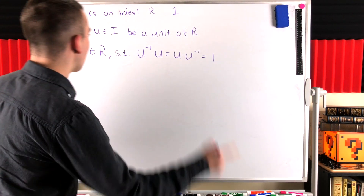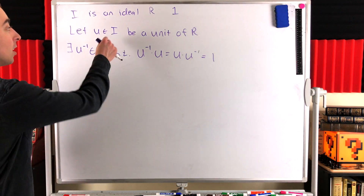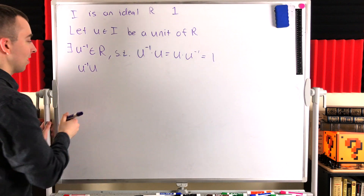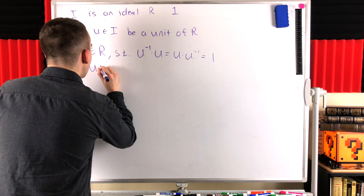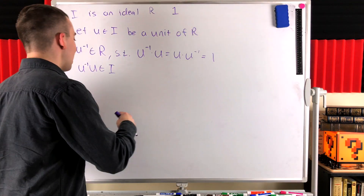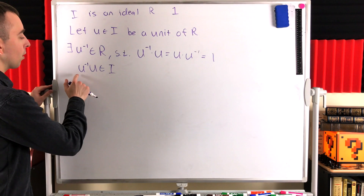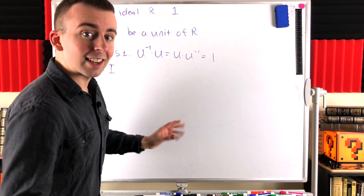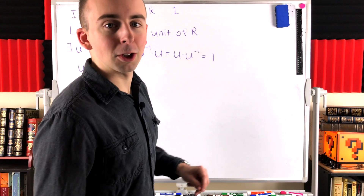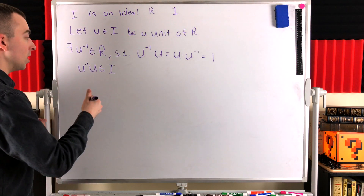Now, why is this super useful when we're talking about an ideal? Well, remember, we say that ideals absorb multiplication. So if we take an element from the ideal — like U — and combine it with any element from the ring — like U inverse — the product also has to be in the ideal. So U⁻¹ · U has to be in I. You might be familiar with left ideals and right ideals. In this case it doesn't matter if we're talking about a left, right, or two-sided ideal, because inverses commute. So it's the same thing whether U inverse is on the left or on the right. So we know that U⁻¹ · U is in the ideal, which means that 1 is in the ideal, because that's what U⁻¹ · U equals.